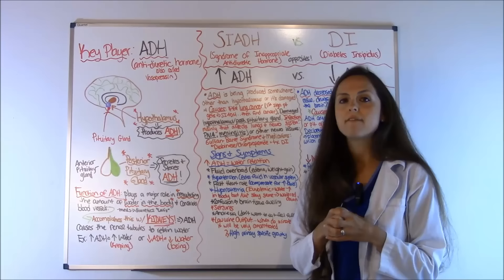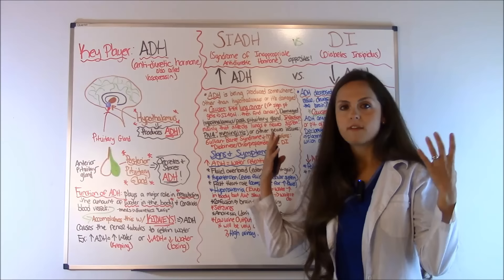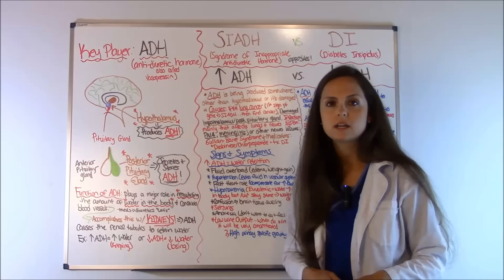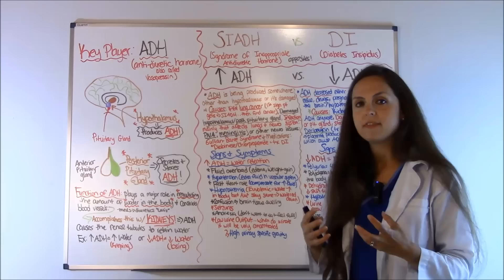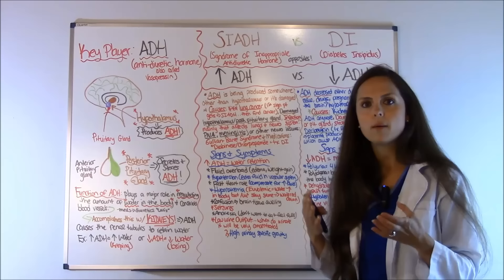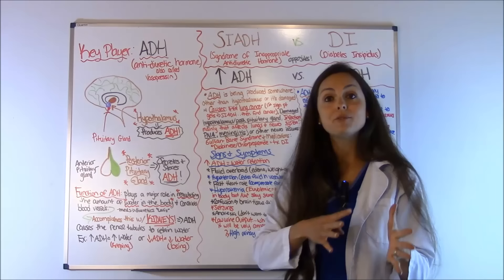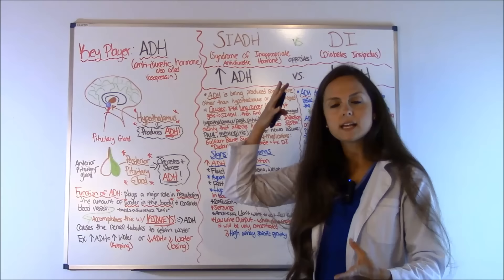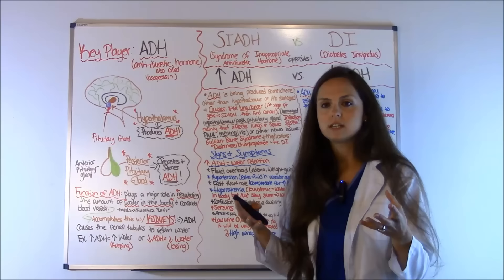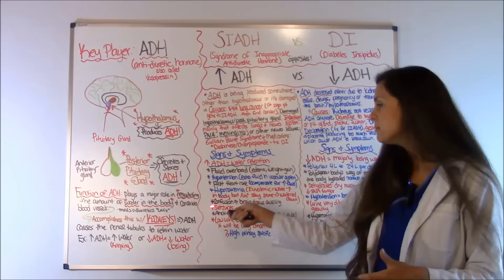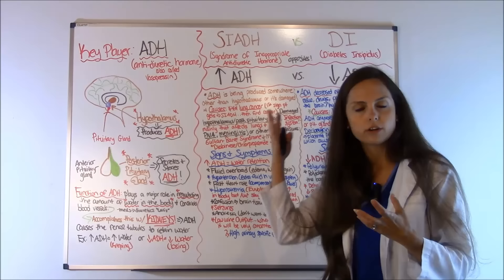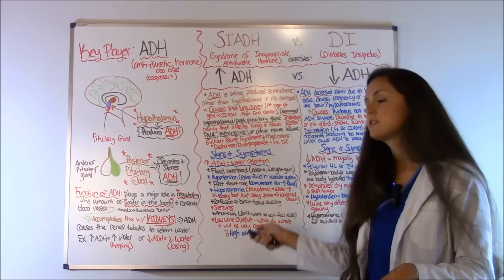The SIADH patient will have edema and drastic weight gain. They'll have high blood pressure because of all that extra fluid in the body, and tachycardia as the body tries to compensate. They'll have hyponatremia — this is euvolemic hyponatremia where there's an increase of water but the sodium stays the same, so the sodium is diluted by all that extra water. The patient will also be confused, lethargic, and at risk for seizures because brain tissue is very sensitive to extra water, causing swelling.